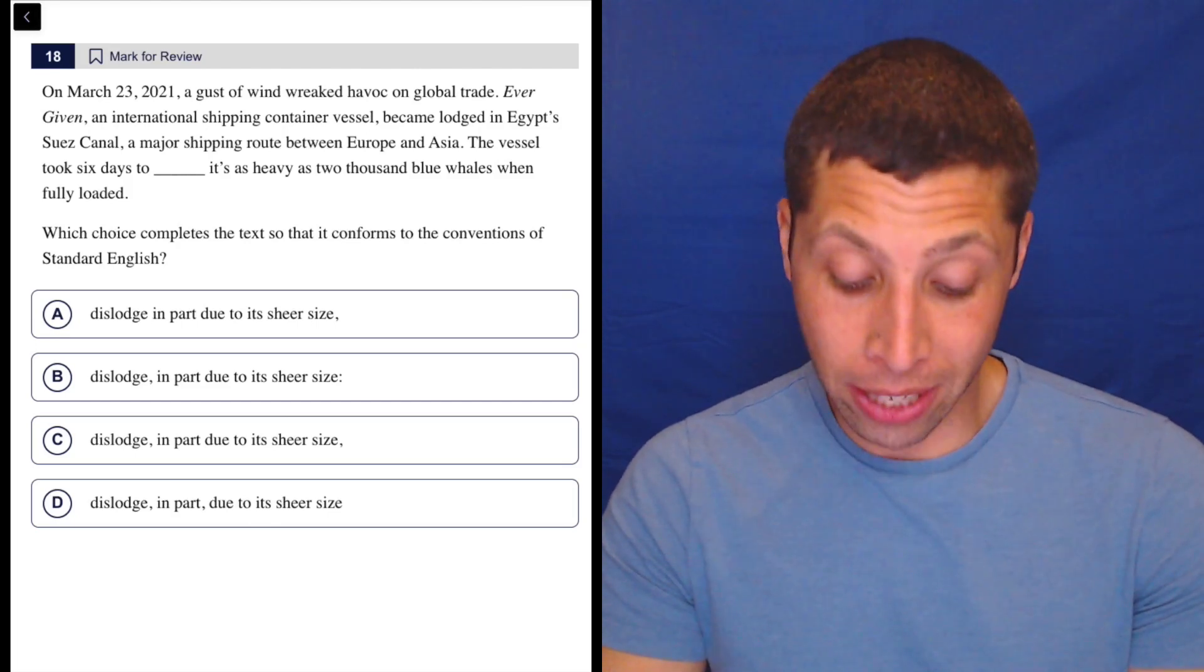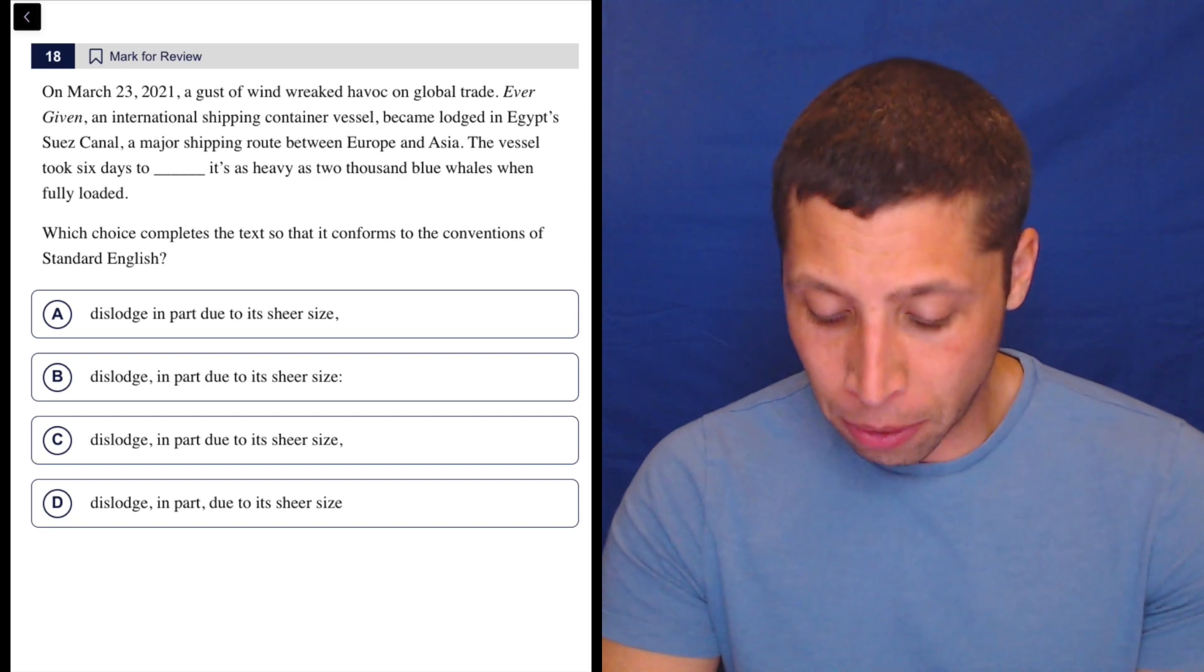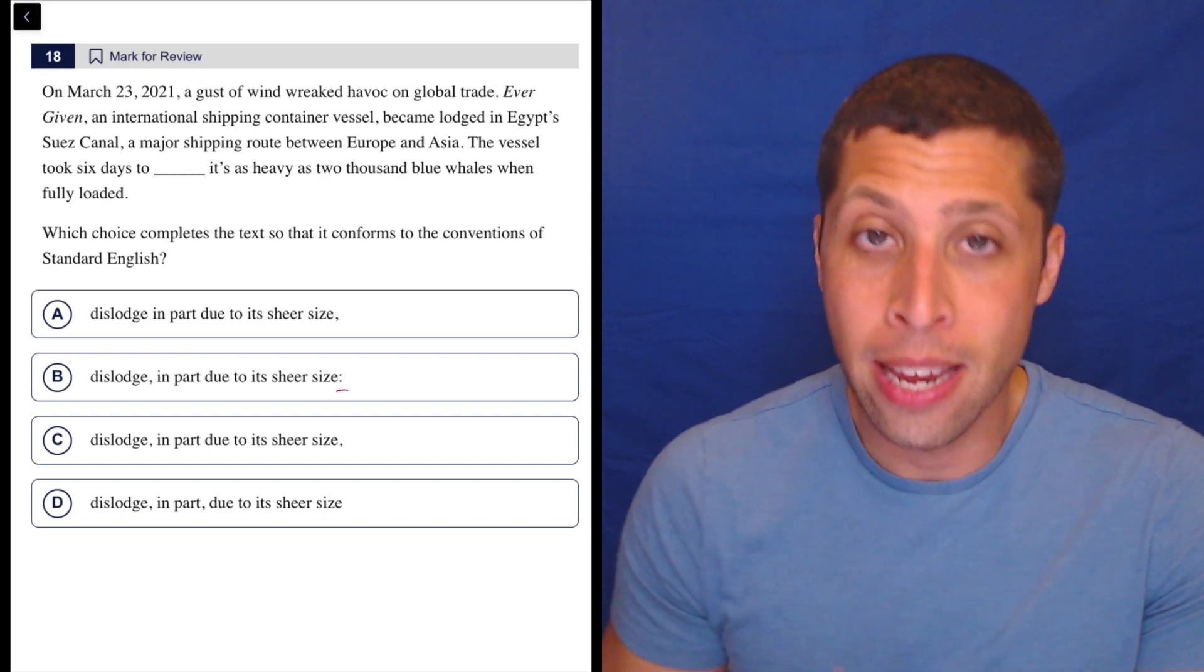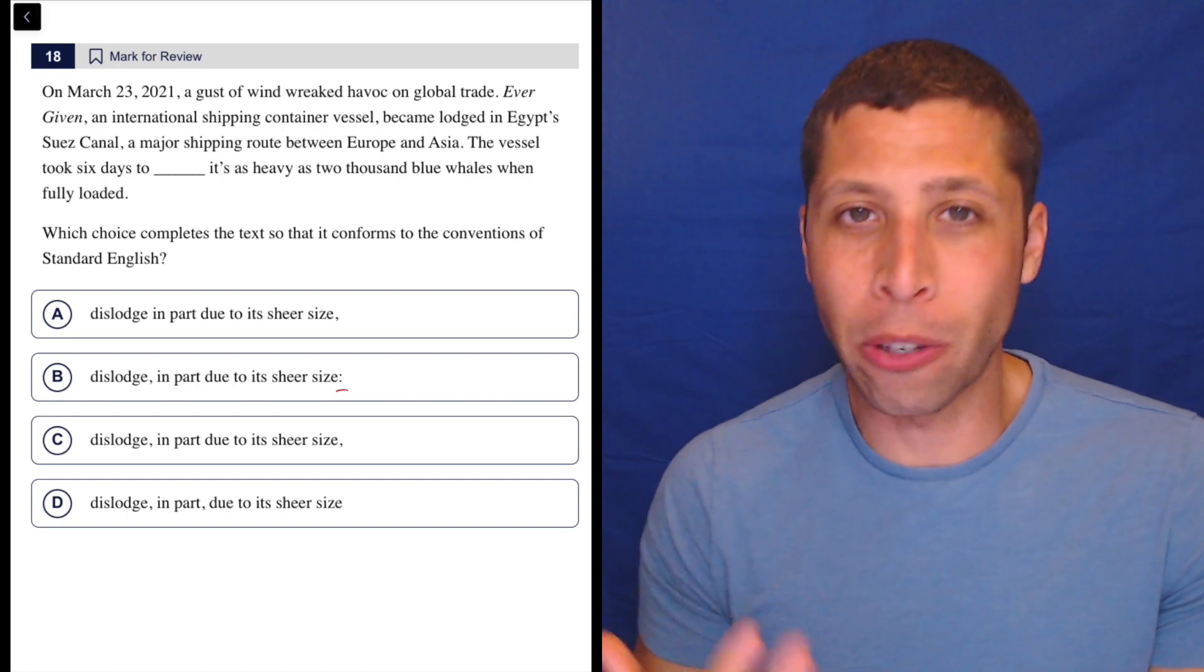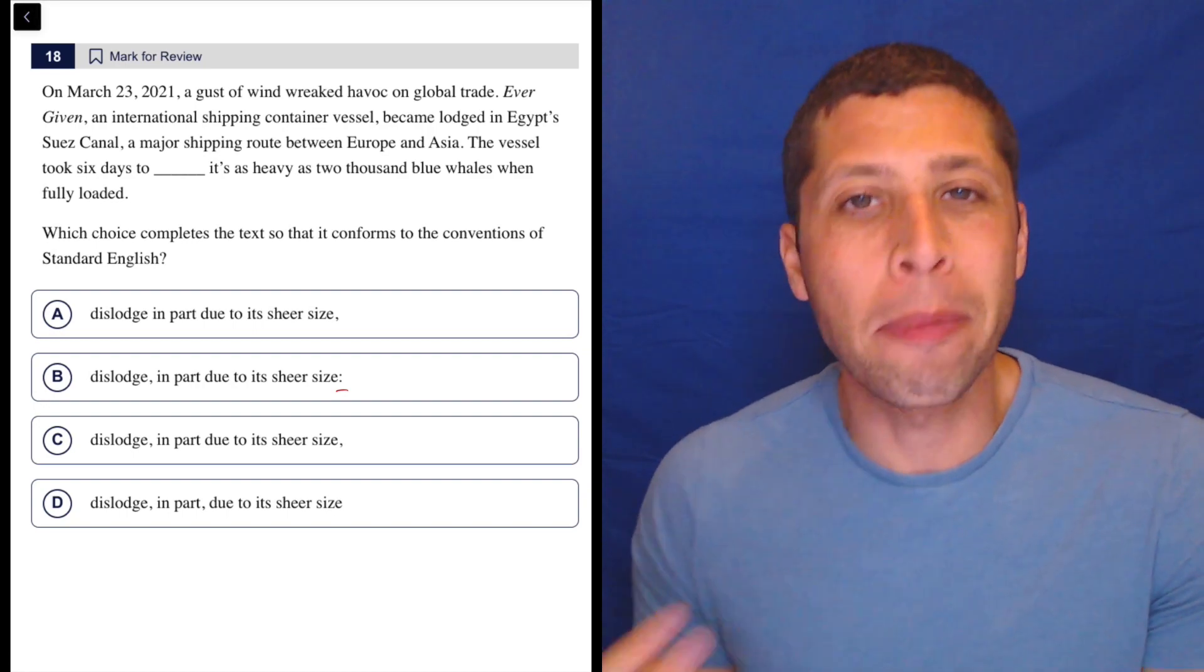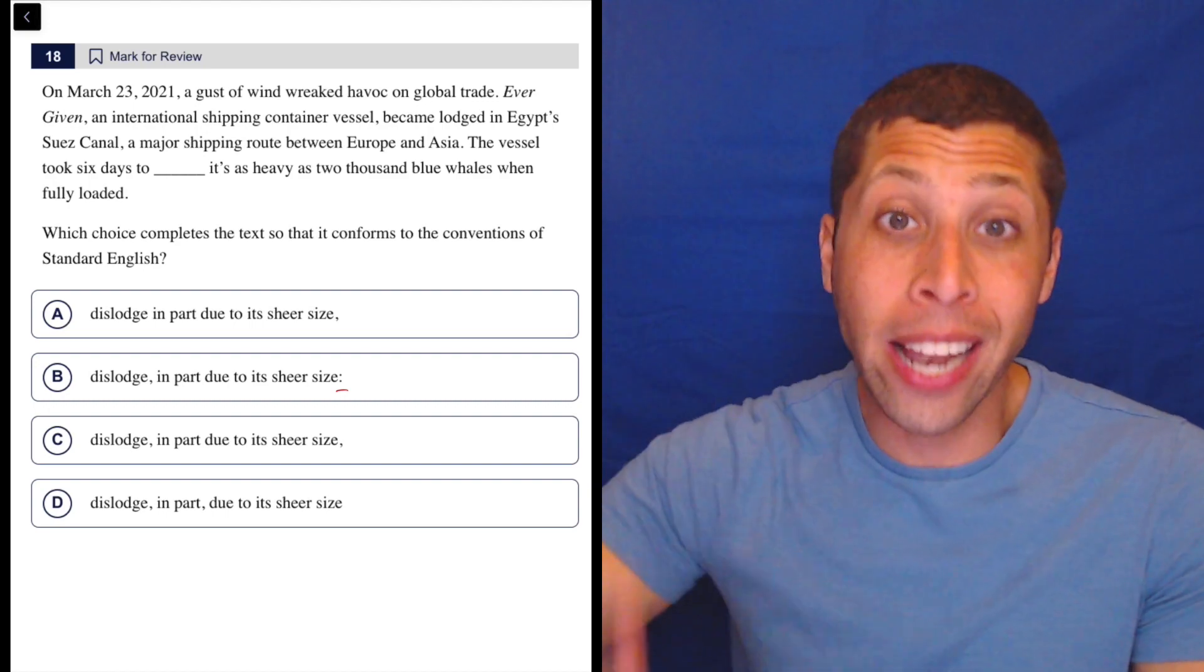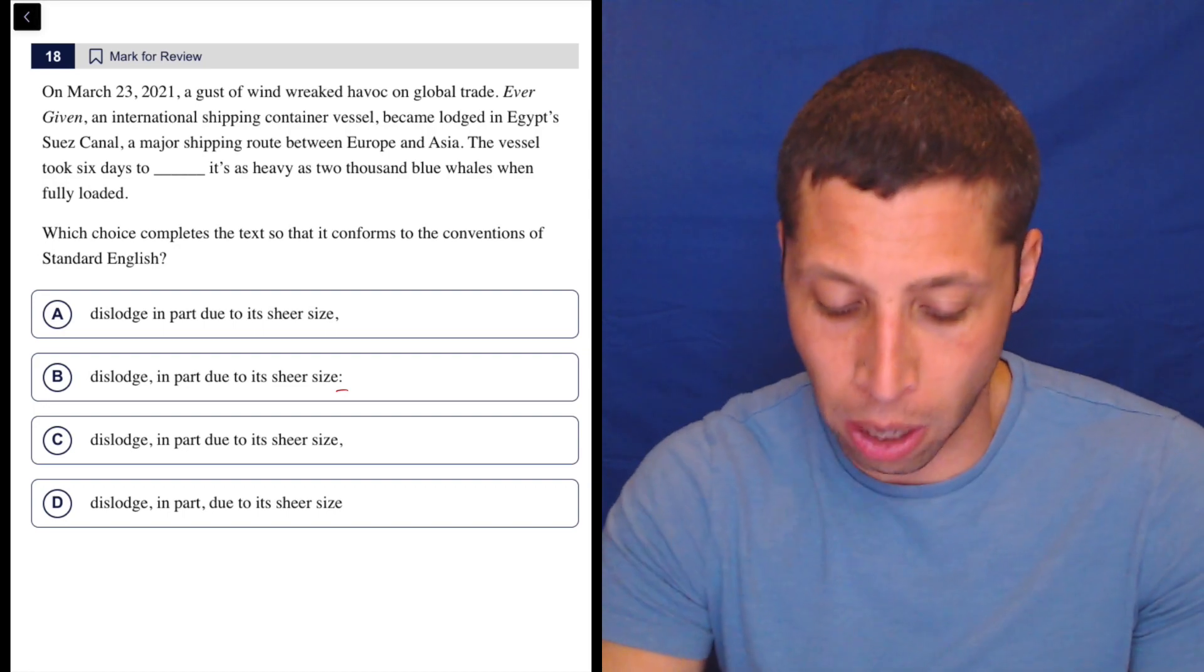The answer choices to this question have a lot going on, right? Lots of commas, lots of words. The words aren't changing, but there's lots of commas kind of coming and going. We have the colon in B. So there's a lot of things that just make this scary. But basically, when we have all these punctuation things going on, we know it's about sentence structure. Especially the colon, because that's such a definitive end of a sentence kind of punctuation mark. So we have to think about sentence structure as we're going.